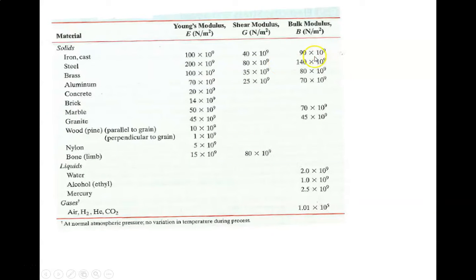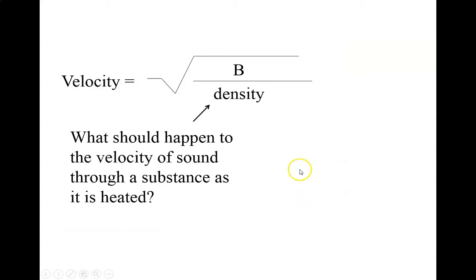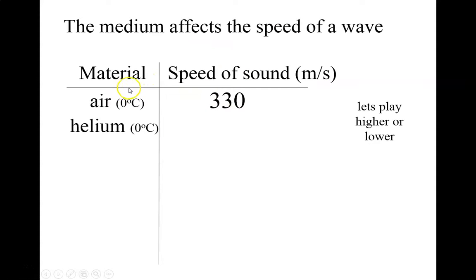These are some bulk moduli for different materials. Steel has a high bulk modulus, water has a lower one, and gases have even lower bulk moduli. As something is heated it expands, its mass doesn't change, so its density goes down. Decreasing density means the velocity of the wave increases.